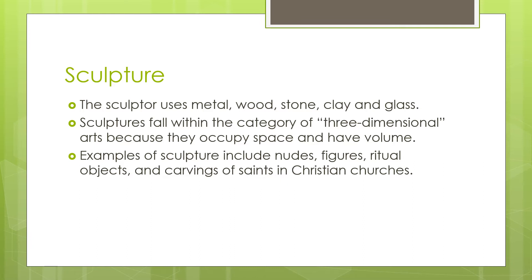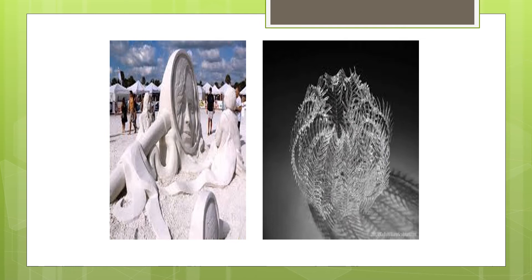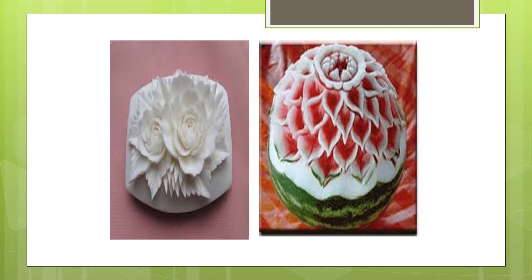The sculptor uses metal, wood, stone, clay, and glass. Sculptures fall within the category of three-dimensional arts because they occupy space and have volume. Examples of sculpture include nudes, figures, ritual objects, and carvings of saints in Christian churches. The marble sculpture is an example where you subtract from your medium by chiseling out parts to create the figure, while the metal sculpture is an example where you add by welding more metal pieces. Other media for sculpture include sand, glass, soap, and fruits.